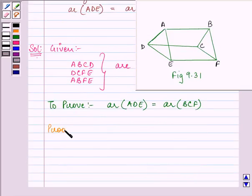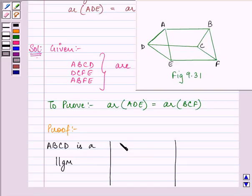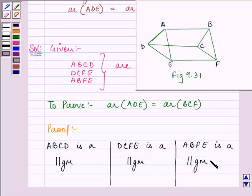Let us continue with our proof. Now, here we are given ABCD is a parallelogram, DCFE is a parallelogram, and ABFE is a parallelogram.